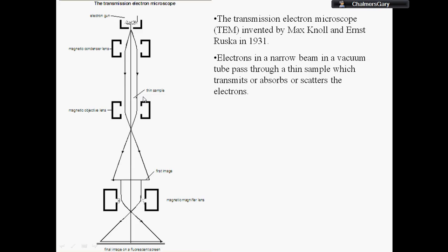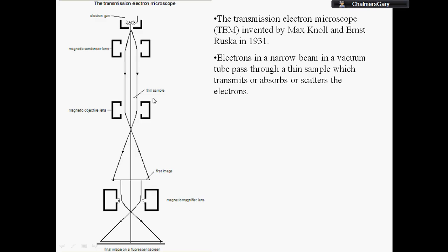The thin beam goes through that thin sample, then the beam is either absorbed or scattered or transmitted. It's the transmitted electrons that will produce the image. Electrons from each point on the sample are focused by electromagnetic lenses onto a fluorescent screen shown at the bottom here to form an enlarged image of the sample.